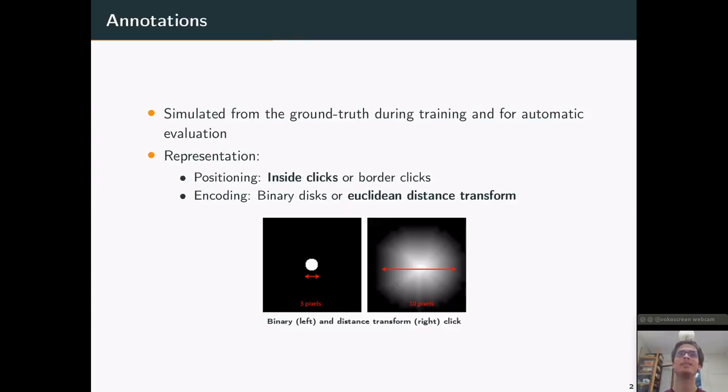We also studied two aspects of these annotations. So first the positioning, inside clicks or border clicks. Inside clicks means that the clicks are located in the middle of the instances, so for example in the middle of a car, while the border clicks means that they are located between two instances, so for example to delimit a car from the road. And we also studied the encoding of the annotations: binary clicks or Euclidean distance transforms, as shown in this image.